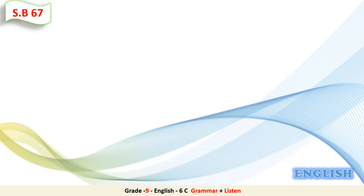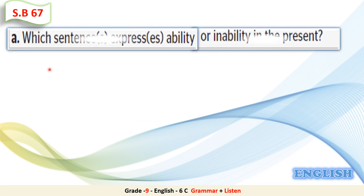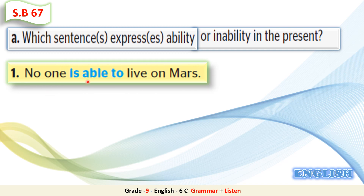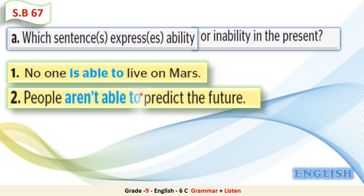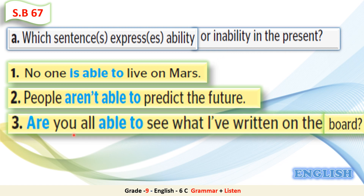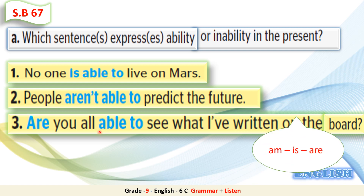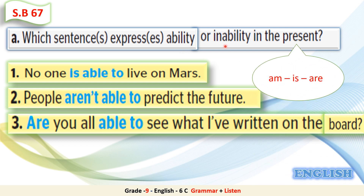After reading the sentences, it's time to answer the questions. Question A: Which sentences express ability or inability in the present? Sentence 1 – 'No one is able to live on Mars' – uses 'is able to' to express ability in the present. Sentence 2 – 'People aren't able to predict the future' – uses 'aren't able to' for inability. Sentence 3 – 'Are you all able to see what I've written on the board?' So we can use am, is, or are plus 'able to' to express ability or inability in the present. Well done, students.